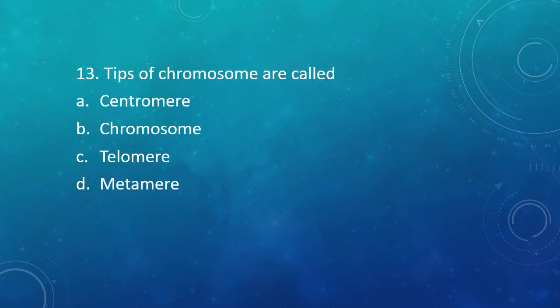Question 13: Tips of chromosomes are called — Option A: Centromere. Option B: Chromomere. Option C: Telomere. Option D: Metamere. The correct answer is Option C — Telomere.